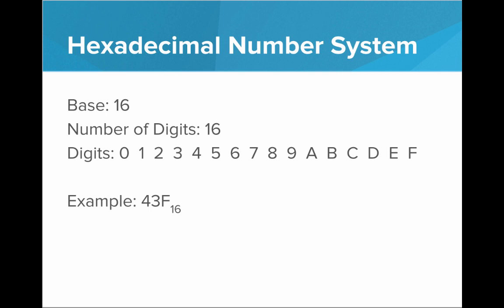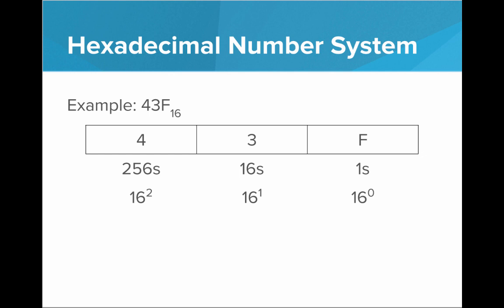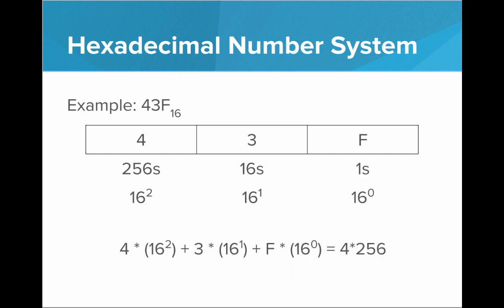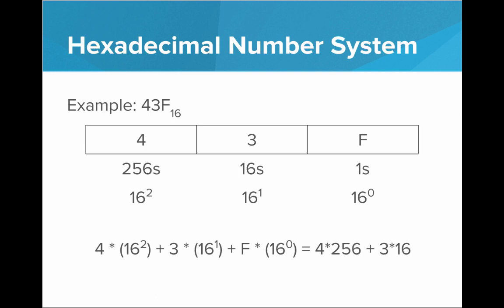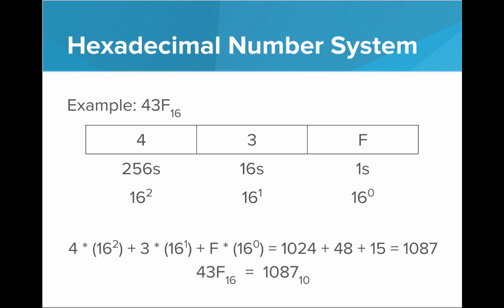Let's look at an example: 43F is a single number in hexadecimal. Let's see what 43F is in decimal. We lay out all the digits and put the value of each place below it. This is the 1s place (16 to the 0), this is the 16s place (16 to the 1st), and this is the 256 place (16 squared). To get the value, we multiply each digit by its place: 4 times 16 squared, 3 times 16, and F times 16 to the 0. That means 4 times 256 plus 3 times 16 plus 15 times 1, giving a final value of 1,087. So 43F in hexadecimal is 1,087 in base 10.